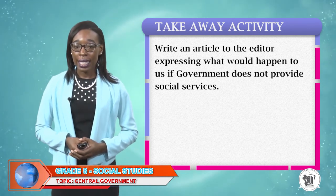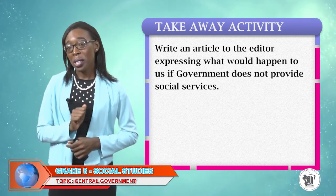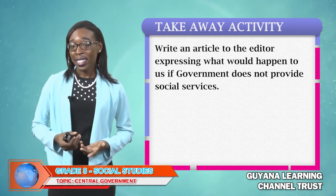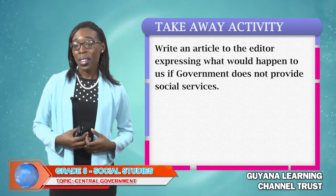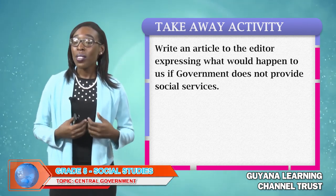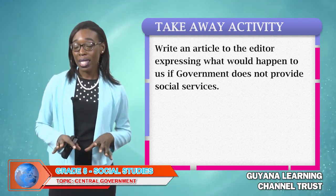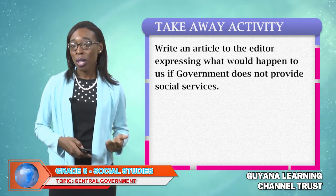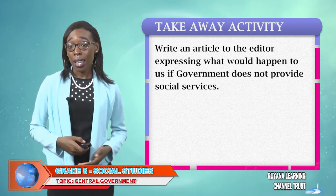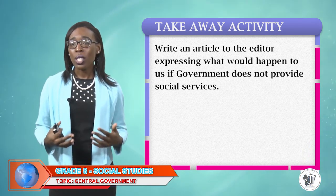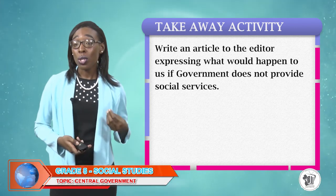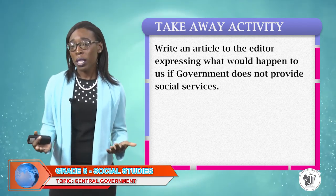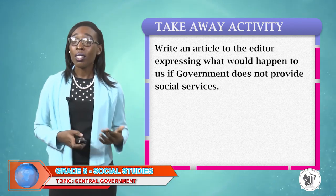Here's a takeaway activity from today's lesson. Grab your pen and book and take note of the activity. You are required to write an article to the editor expressing what would happen if government does not provide social services. Today we listed approximately seven social services that central government provides. Your letter to the editor will express your views as to what will happen in our nation if those social services — you can identify two — are not provided.